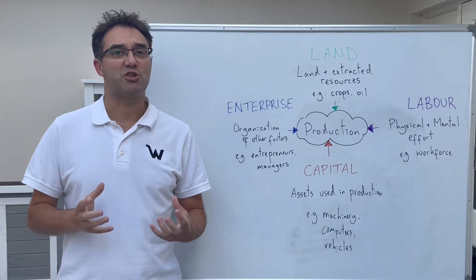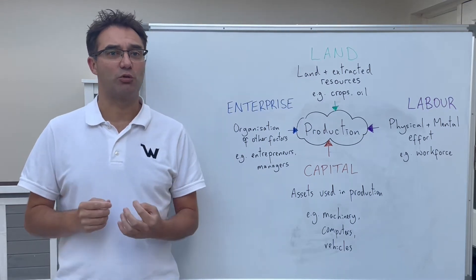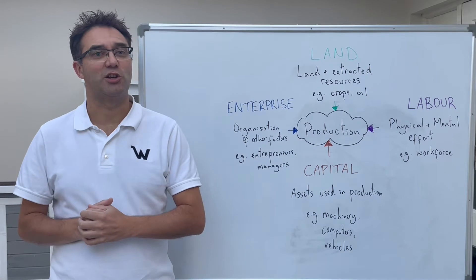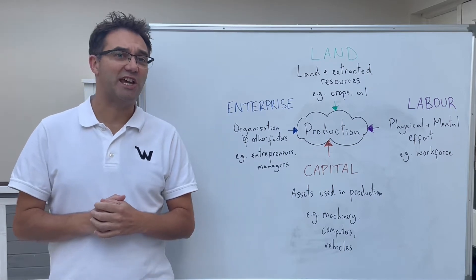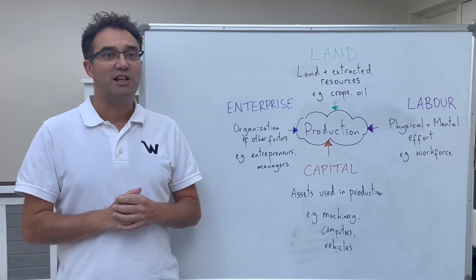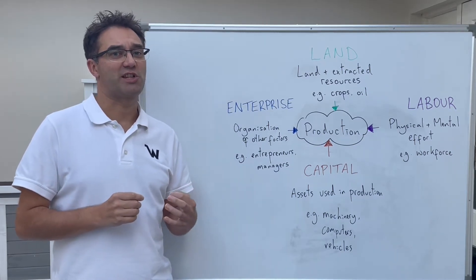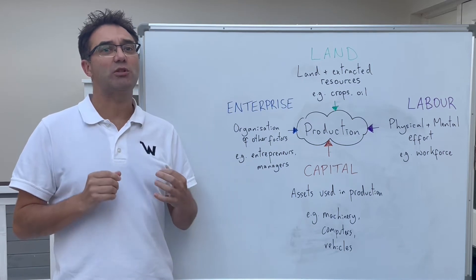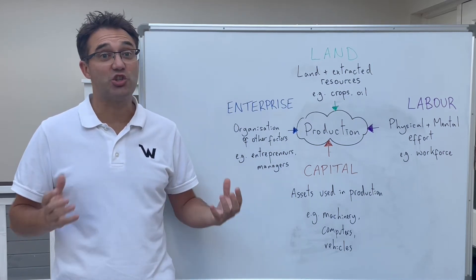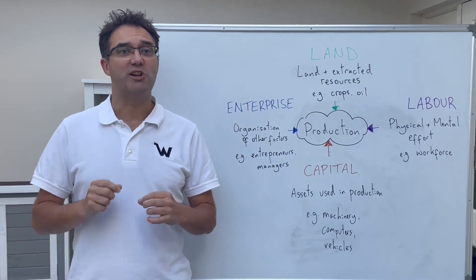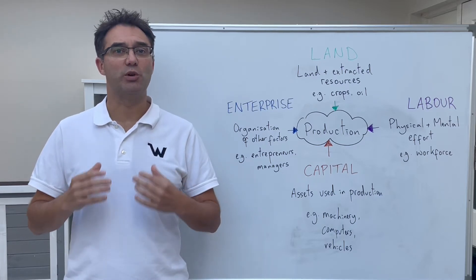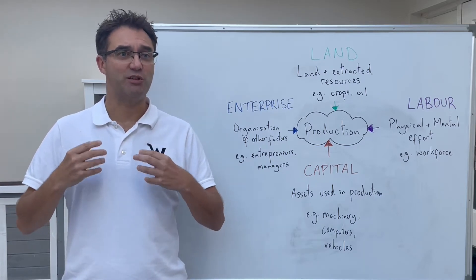We can split the resources into four groups known collectively as the factors of production, depending on their characteristics. Land is all natural resources, naturally occurring or farmed. It's not just the ground area, and we say that this land is rewarded by the payment of rent.